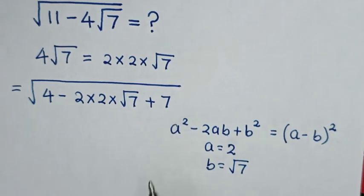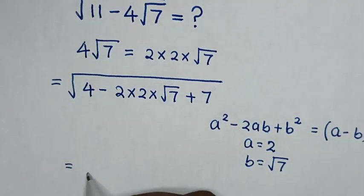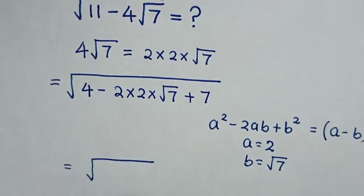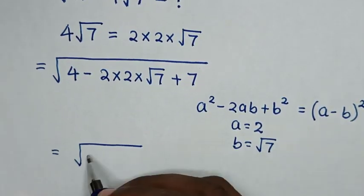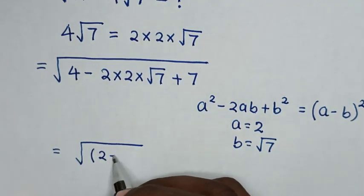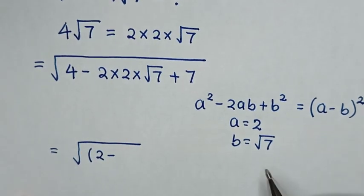So this expression will be equal to square root of, a is 2, so it will be 2 minus b, which is square root of 7, and this is squared.